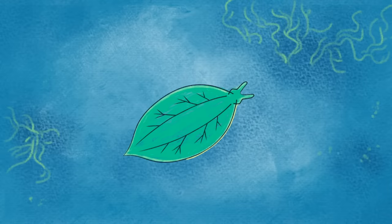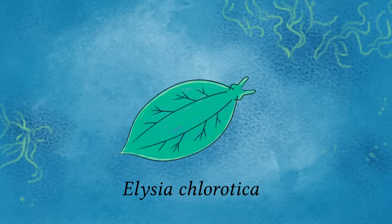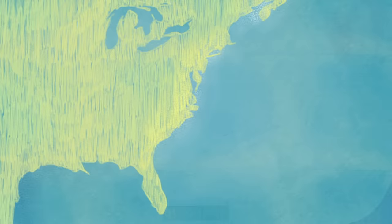Take a good look at this slug. No, not that. That's a leaf. This slug. There we go. Elysia chlorotica may not look like much. Okay, it looks like a bright green leaf, but it's one of the most extraordinary creatures around.